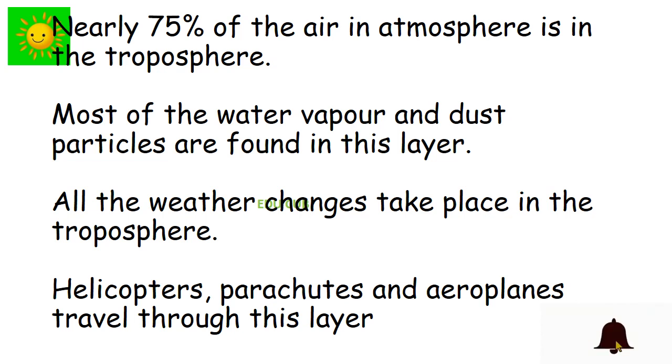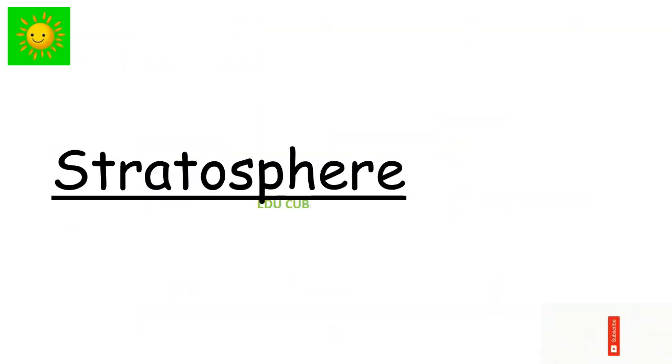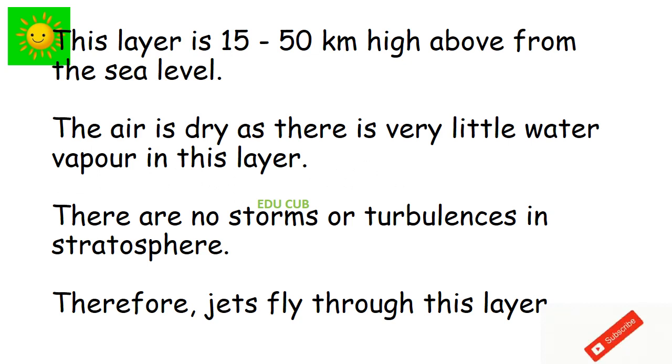Most of the water vapors and dust particles are found in this layer. All the weather changes take place in troposphere. Helicopters, parachutes, and airplanes travel through this layer. Next one is stratosphere. This layer is 15 to 50 km high above from the sea level.